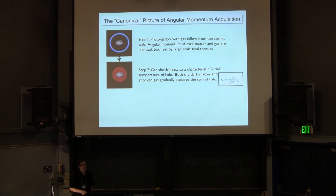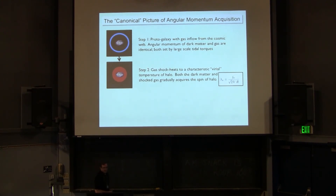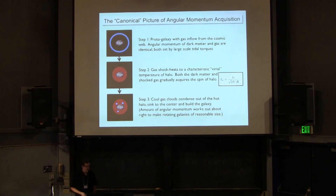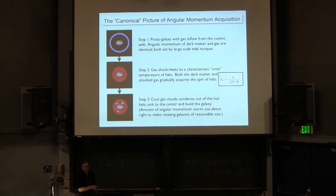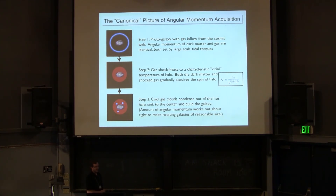The spin parameter lambda is the specific angular momentum j normalized by the virial velocity and the virial radius. For a wide range of dark matter halos over a wide range of cosmic time, you have a more or less constant spin parameter, which you can use to characterize what's happening with your baryons, since baryons have roughly the same angular momentum as they come in as the dark matter. If the hot gas that shock heats has roughly the same lambda as the dark matter, and it sinks to the center, you can just barely get galaxies about the right size as what we observe.